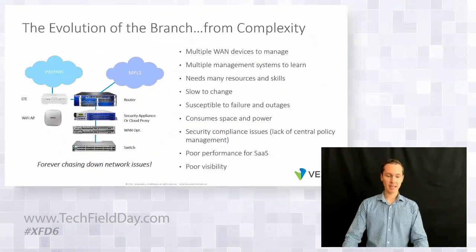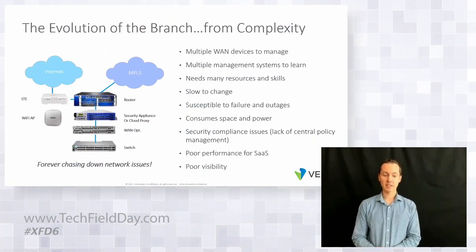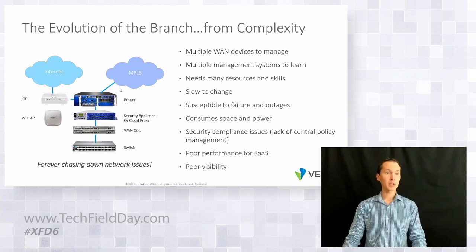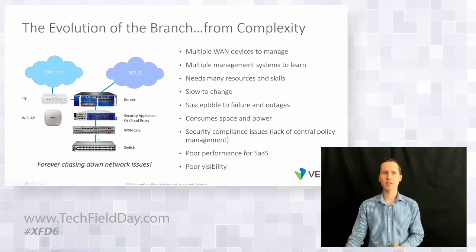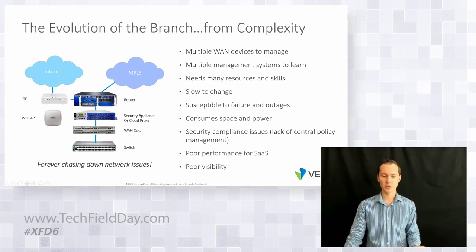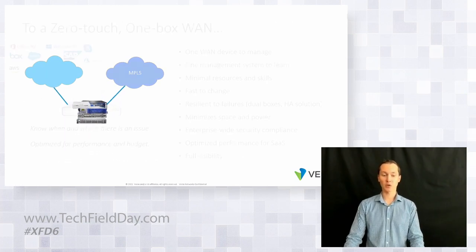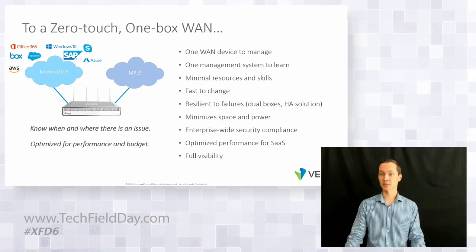The next topic in this section is the evolution of the branch and single-pass architecture. If we review how networks were built maybe 15 years ago, companies had to purchase separately routers, security appliances, WAN optimization devices, switches, Wi-Fi devices, LTE modems, and so on. Now with SD-WAN and single-pass architecture, we can replace all of that with a single device from Versa Networks.